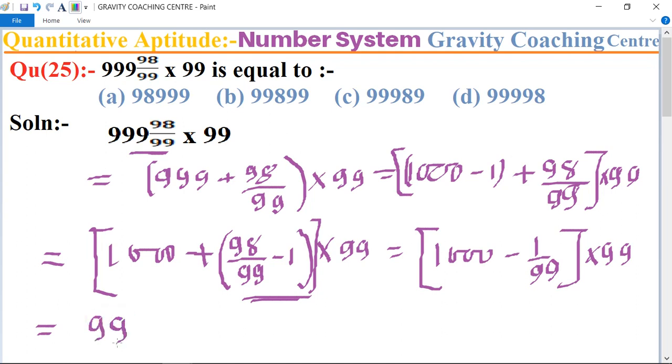First one will become 99 thousand minus 1, so equal to 98999, triple 9, which is the required answer.